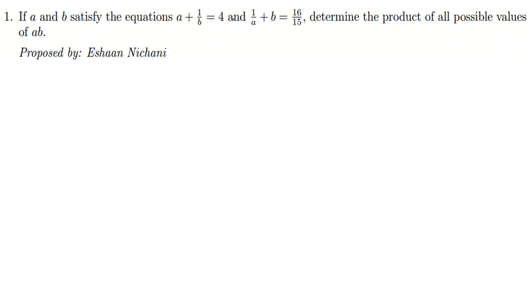a plus 1 over b equals 4 and 1 over a plus b equals 16 over 15, determine the product of all possible values of ab. Let's write the first equation: a plus 1 over b equals 4.